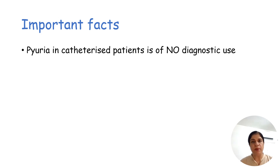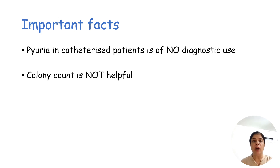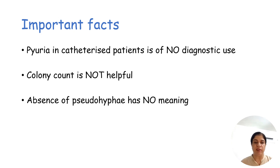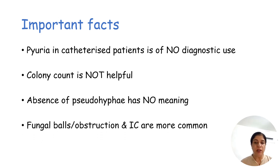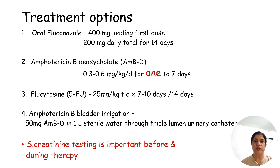Remember, pyuria is present in catheterized patients even without infection, so it is not useful in that context. However, in a non-catheterized patient, pyuria does indicate active infection. Colony count is not helpful, as even very low counts have been associated with renal involvement. Absence of pseudohyphae does not rule out active infection because Nakaseomyces glabrata does not produce pseudohyphae, nor do some mutants of Candida albicans. Fungal ball obstruction and invasive candidiasis are more commonly seen in infants — in almost 35% of cases.